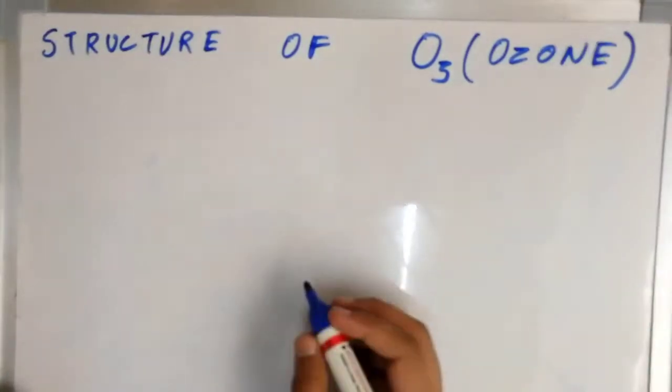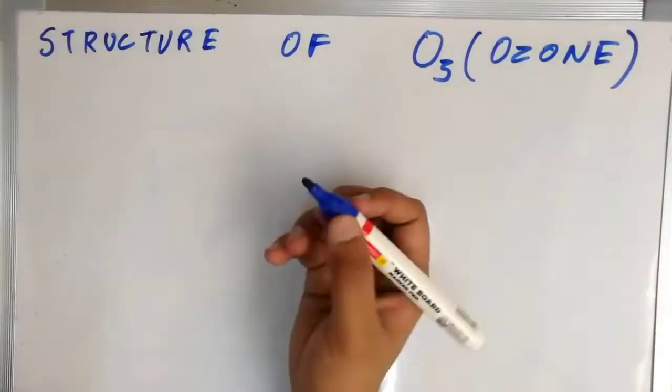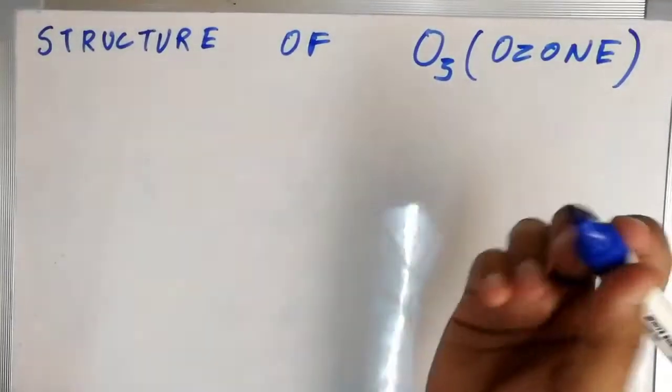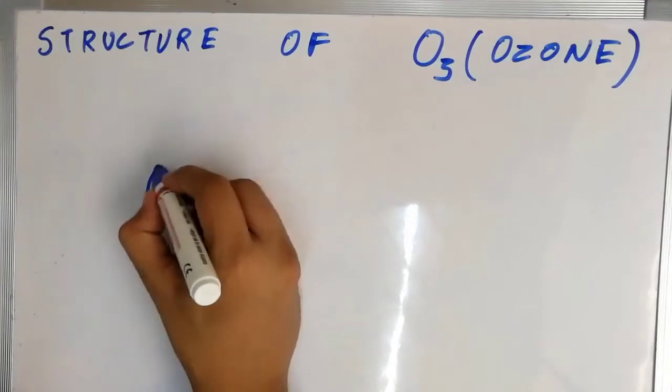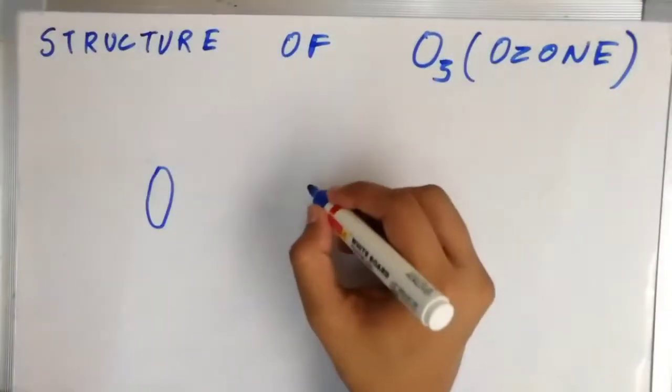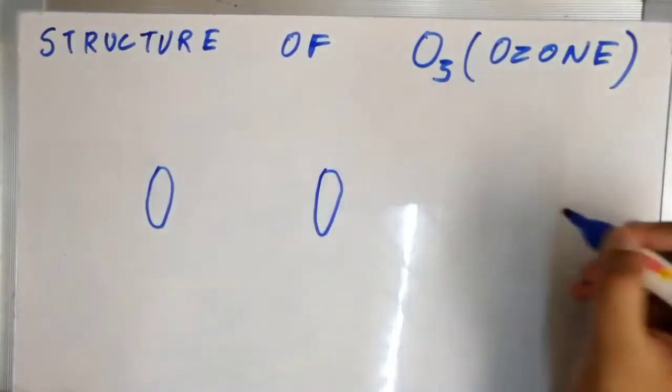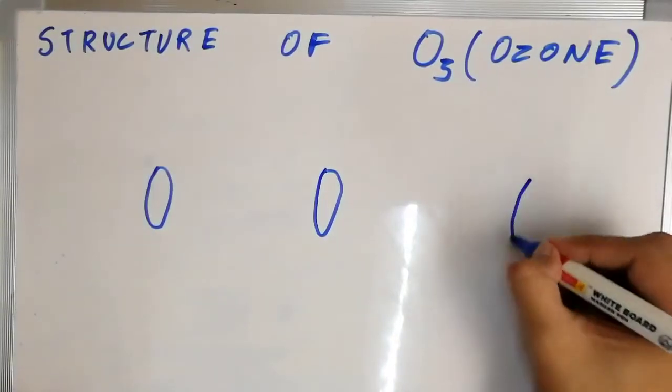Let's see. Ozone has three oxygen atoms. So let's draw. This is one oxygen atom, this is another oxygen atom and this is the third one.